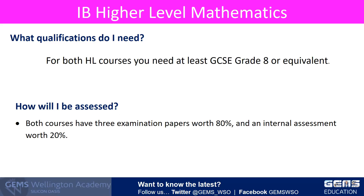You will be assessed by the IB in two ways. First, you will have three examination papers at the end of the course worth 80% of your final grade. Second, you will have an internal assessment which is worth 20%. An internal assessment is an essay you will write on an area of mathematics that you will explore.